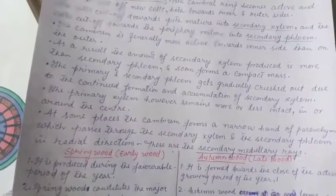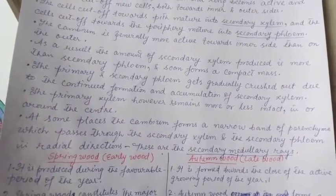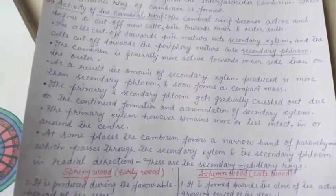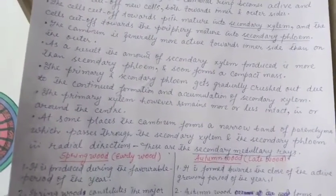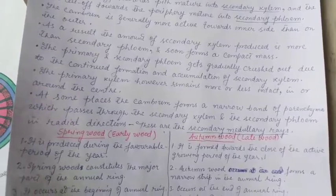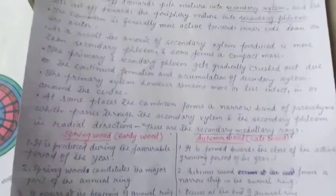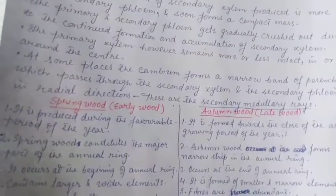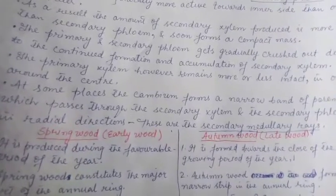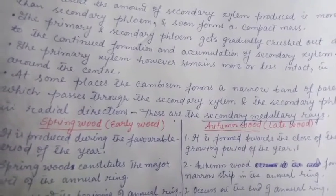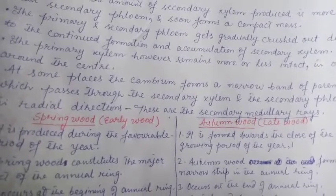This is how dicot trees — like those you see in your locality — increase in girth, being perennial. Now there are different types of woods that get formed. We will see the difference between spring wood, also called early wood, and autumn wood, also called late wood.